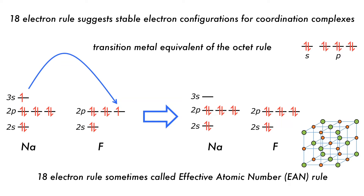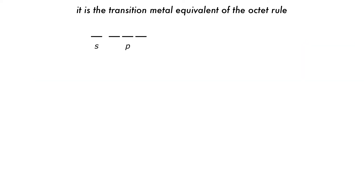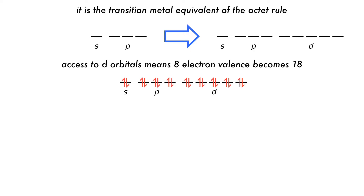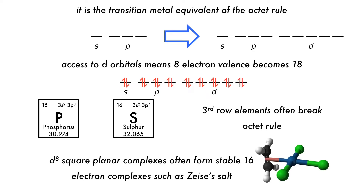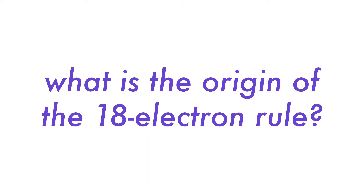The 18 electron rule can be more correctly called the effective atomic number rule, which indicates that the metal is trying to get a full noble element configuration. Extending this to transition metals, we have not only one s and three p orbitals but five d orbitals, for a total of 18 electrons. The metal will be most stable when it has a noble element electron configuration of 18 electrons around the central metal. The 18 electron rule works great for some transition metal complexes but not others, though this doesn't mean that complexes defying it cannot be stable.